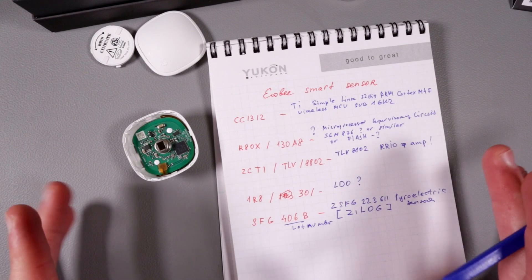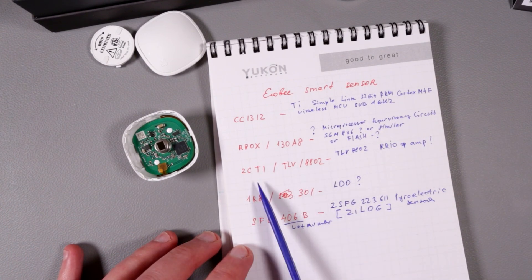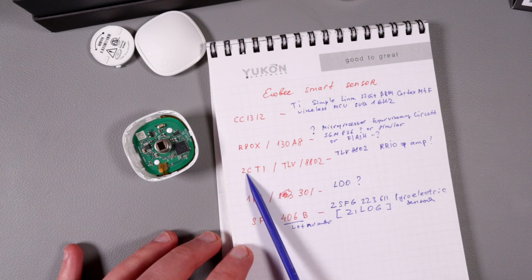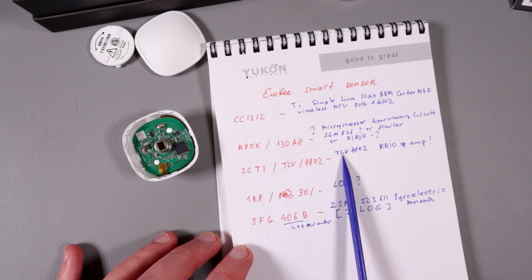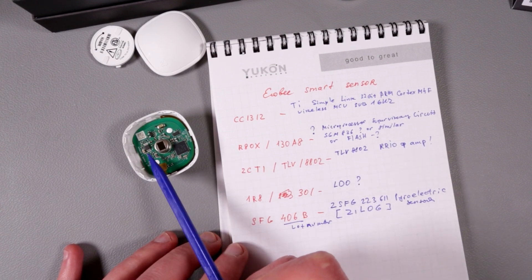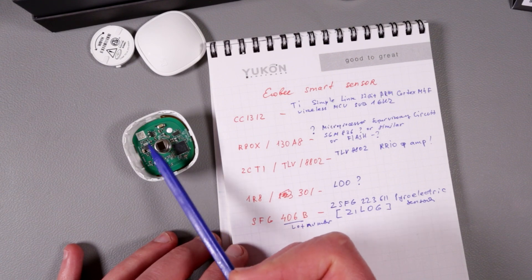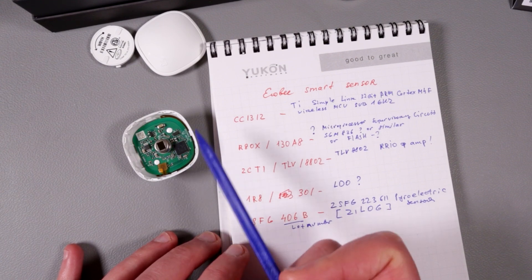The next one is this guy right here. It has marking 2C TI TLV 8802. Turns out to be TLV 8802A operational amplifier. It's very professional profile, probably needed to work with this PIR sensor potentially.